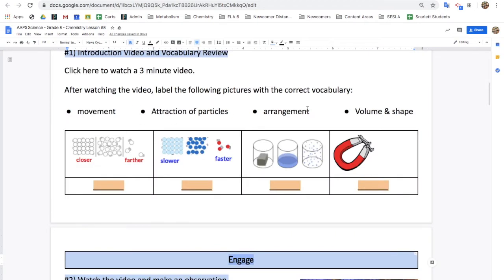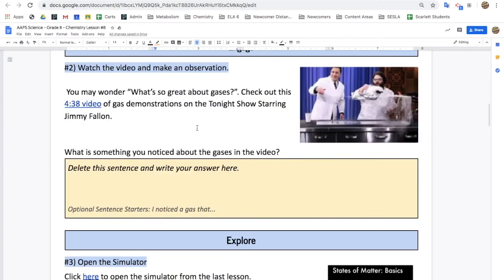Start by matching the vocabulary to the images. For example, slower and faster is movement. Then, watch a really funny video from Jimmy Fallon about gases.